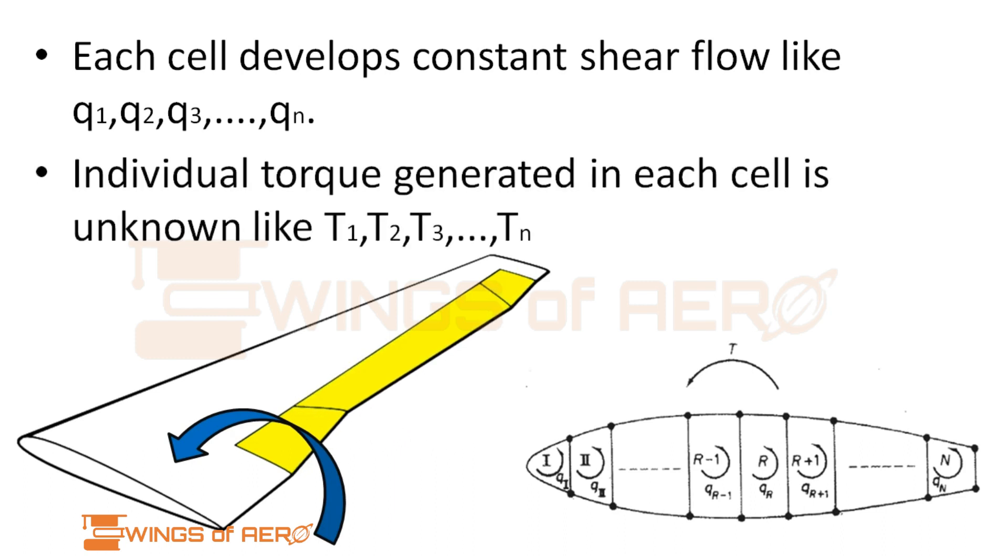Similarly, individual torque generated in each cell is unknown. They are denoted by the letters T1, T2, T3 till tn number of cells.